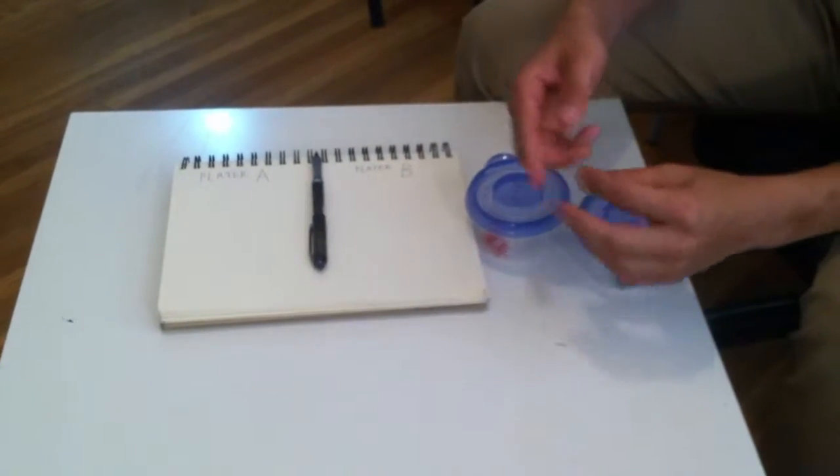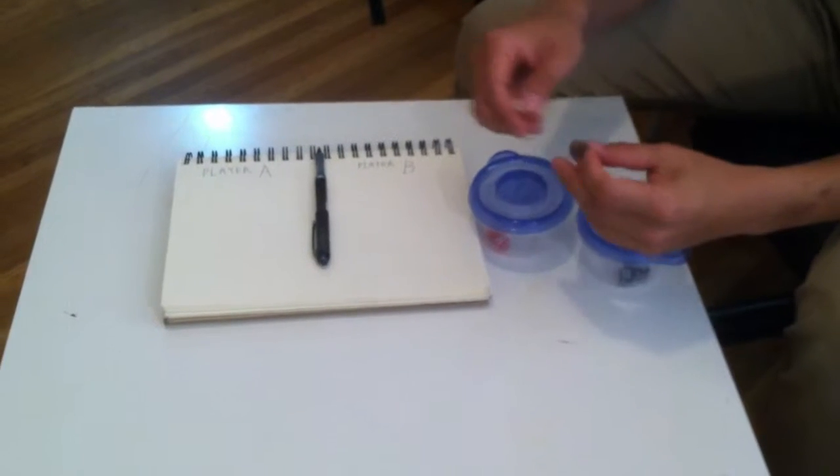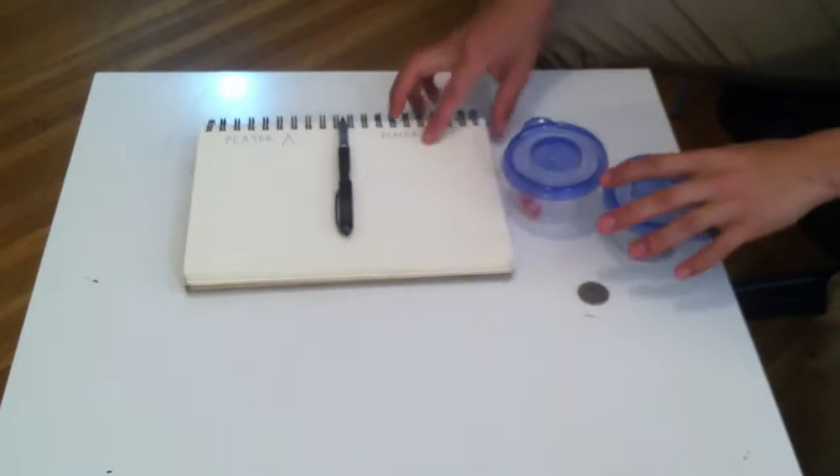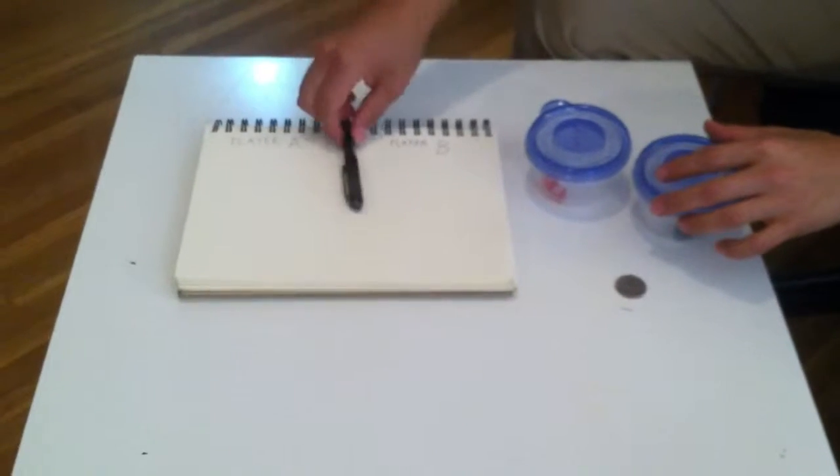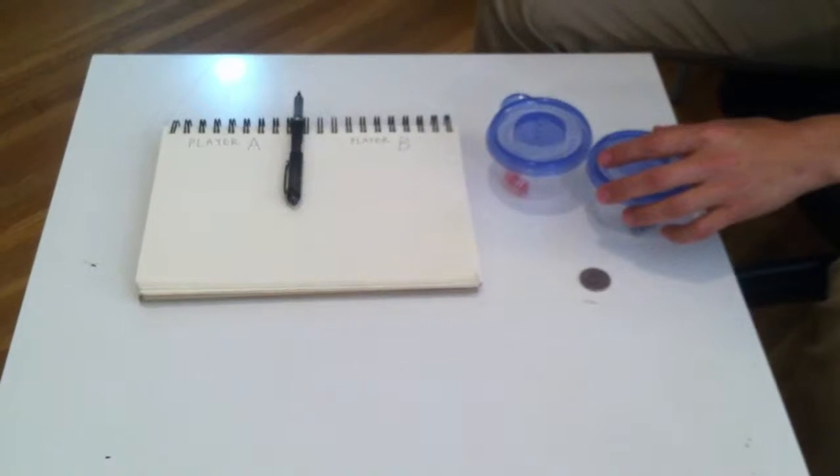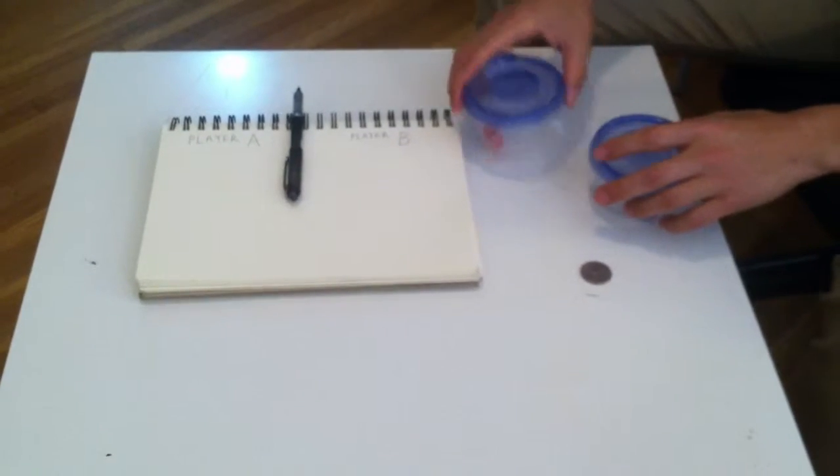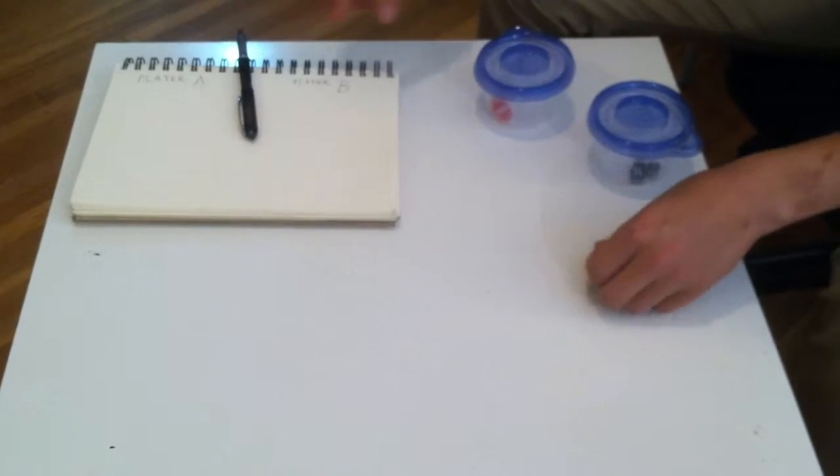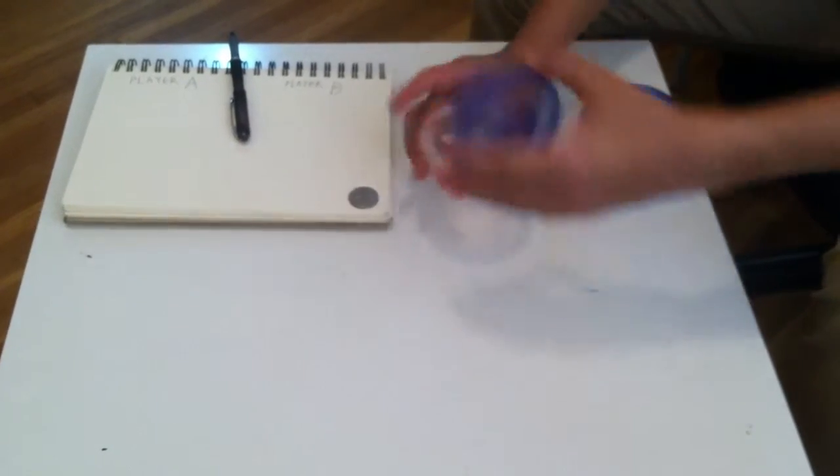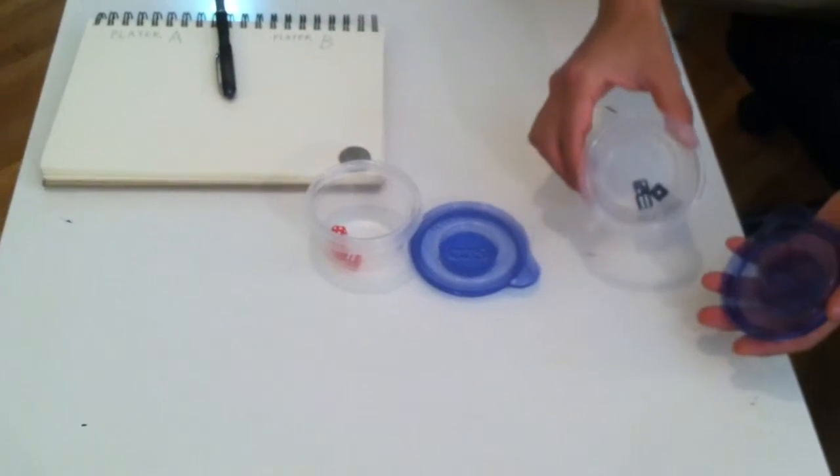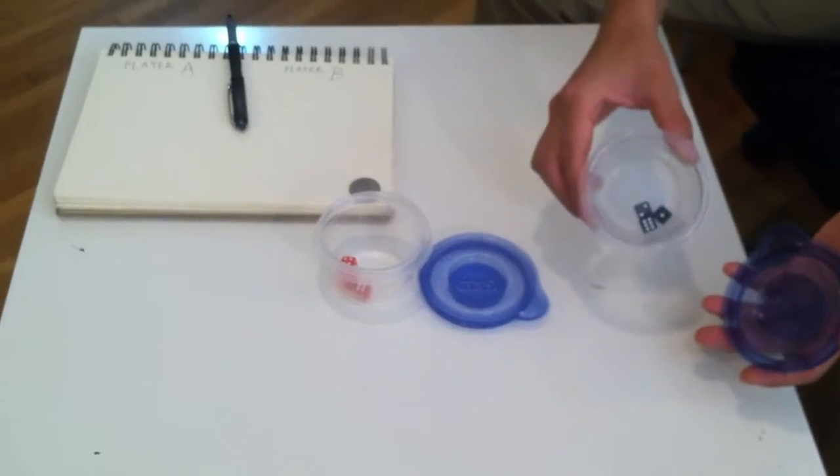Hello, this is Sungbek Choi. This is my explanation video. Here's all my stuff for my game. My game name is Choose the Chance. Here is the board for score, one coin quarter, and two buckets. And there are three dice inside here.